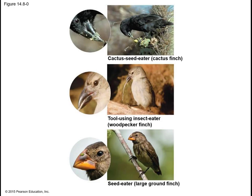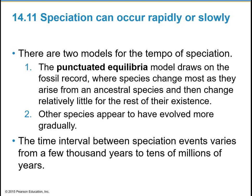There are two models for the tempo of speciation. The punctuated equilibria model draws on the fossil record, where species change most as they arise from an ancestral species and then change very little for the rest of their existence. Other species appear to have evolved more gradually. The time interval between speciation events varies from a few thousand years to tens of millions of years.